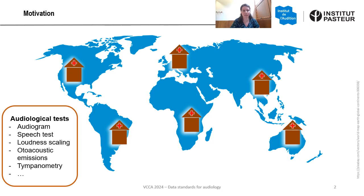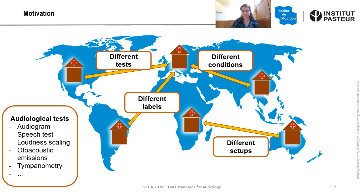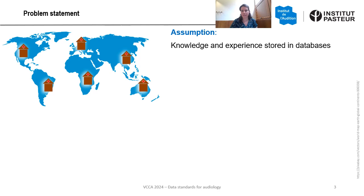You see some examples displayed here in this list. Different tests may be conducted in different databases or in different institutes. The same test can be measured in different conditions. Different labels can be contained, such as diagnostic decisions or treatment recommendations for hearing devices for example. We can measure them in different setups, for example in free field or in headphone conditions. And different populations may be contained in one database. Despite these differences, I would assume that knowledge and experience is stored in these databases which would be very valuable to exploit.